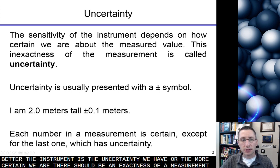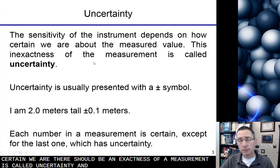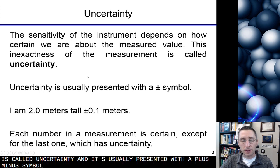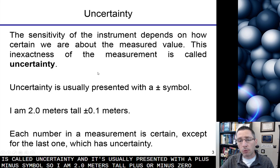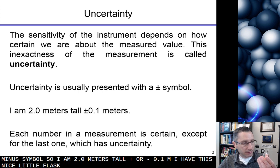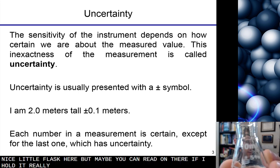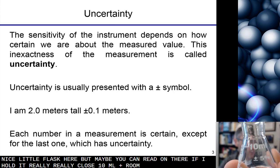The inexactness of a measurement is called uncertainty. And it's usually presented with a plus-minus symbol. So I am 2.0 meters tall, plus or minus 0.1 meters. That's typically how it's done in science. I have this nice little flask here, tiny, but maybe you can read on there if I hold it really close, 10 milliliters plus or minus 5%.